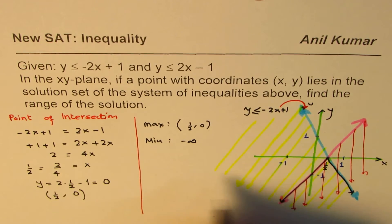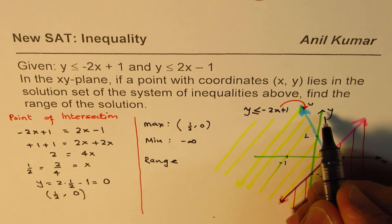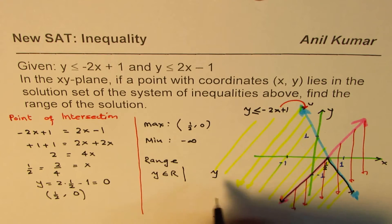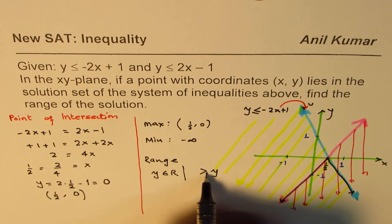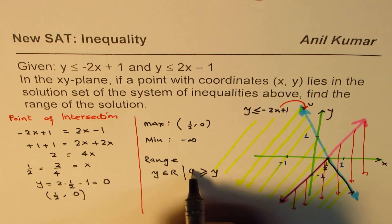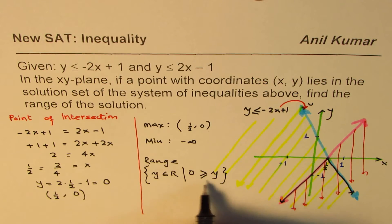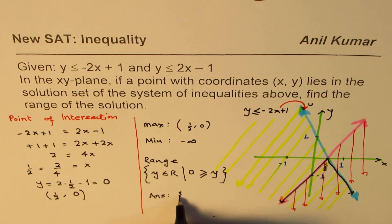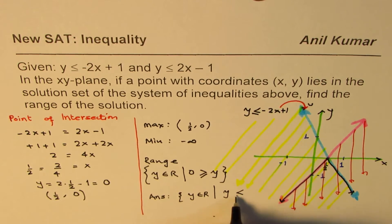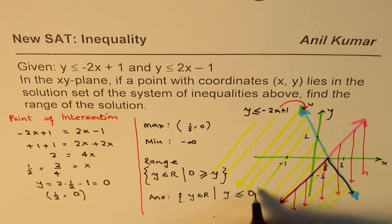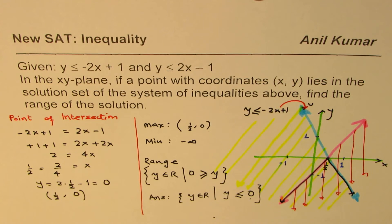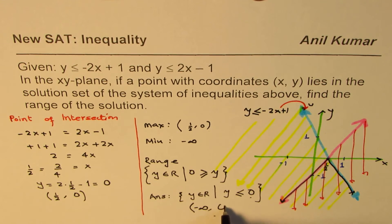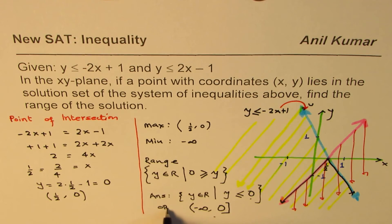So the minimum is negative infinity. We can write the range as: y belongs to real numbers such that y ≤ 0. It's good practice to write lower values on the left side — the maximum is 0 and the minimum is negative infinity. In interval notation, this is written as (-∞, 0], where 0 is included.